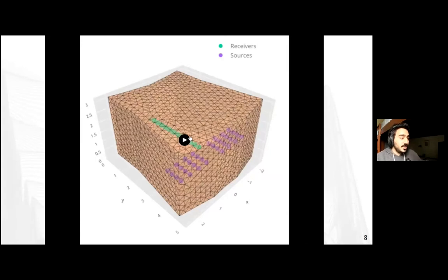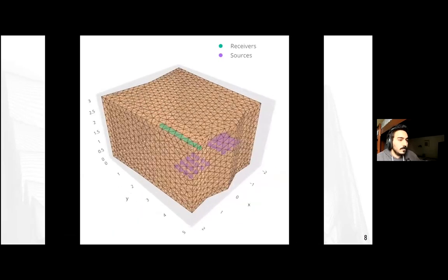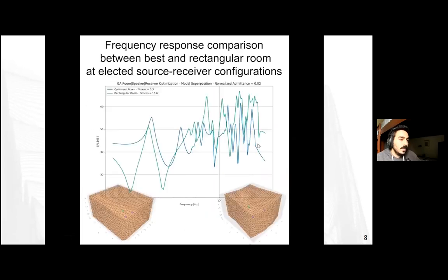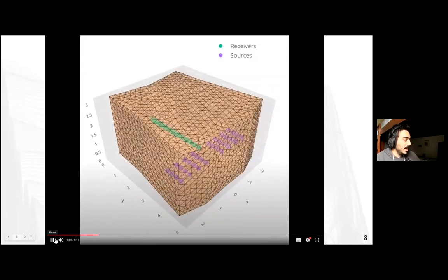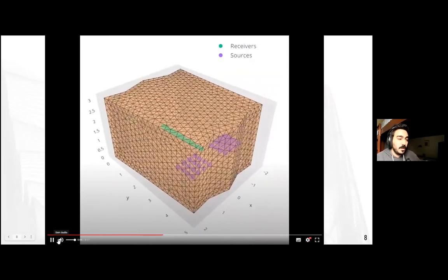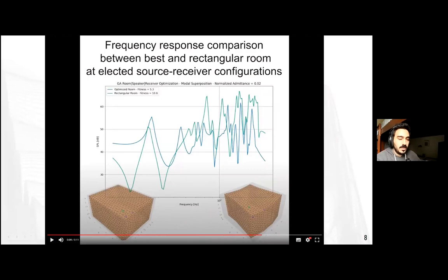I'll show first an animation of what I'm about to describe — hopefully the video displays it clearly. This is just so you can all have a visual intuition of what I'm about to explain. We can see the shape of the room changing dramatically, and we have different source-receiver positions marked by the purple and green dots. In the end, we have a result which I'll go deeper into later.